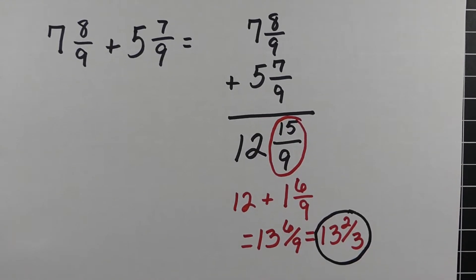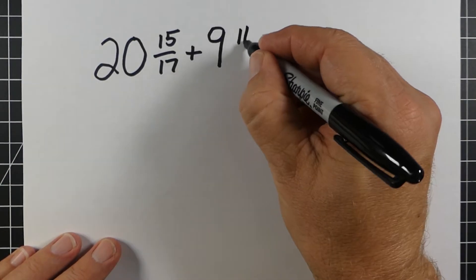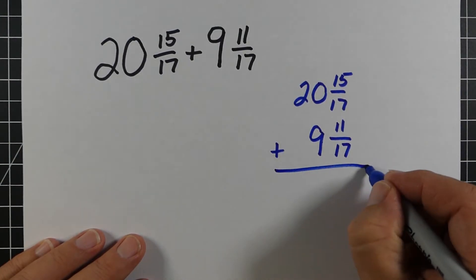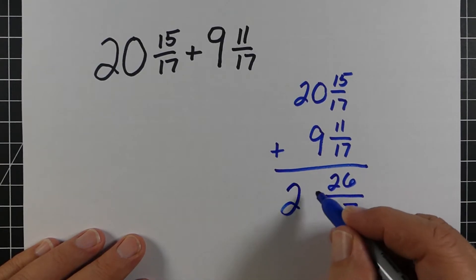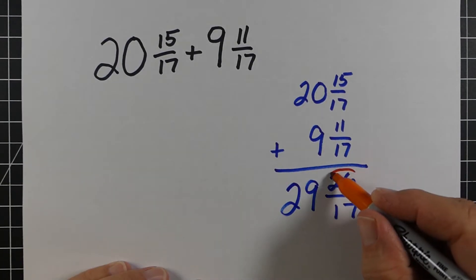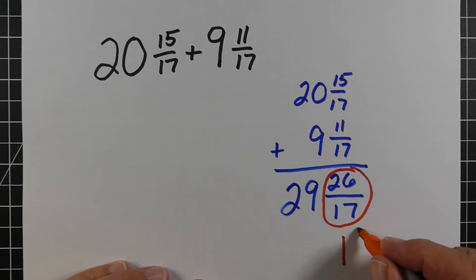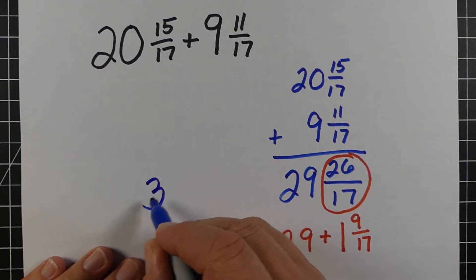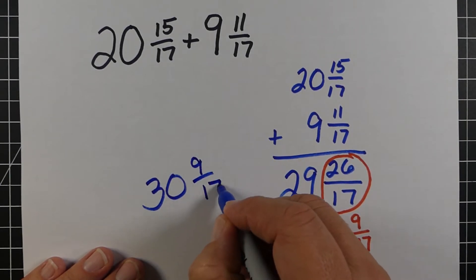Our next example: 20 and 15/17 plus 9 and 11/17. If we add up the fractions, we have 26/17. 20 plus 9 equals 29. Looking at the 26/17, we can think of that as 1 and 9/17, and we add that to 29. When we do that, we get 30, and we keep our fraction of 9/17 — so the answer is 30 and 9/17.